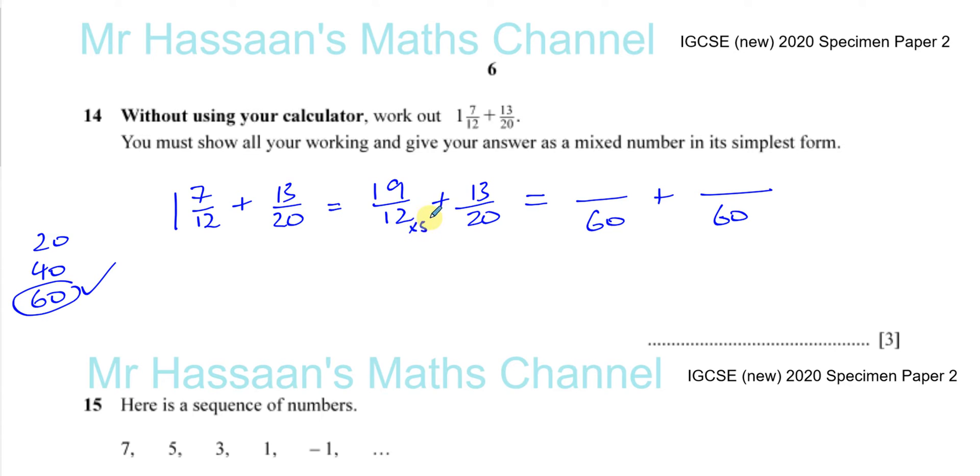We have to make them over 60. We know that 12 goes into 60 five times, so you've got to do 19 times 5, which is 10 times 5 plus 9 times 5, which is 50 plus 45, which is 95.